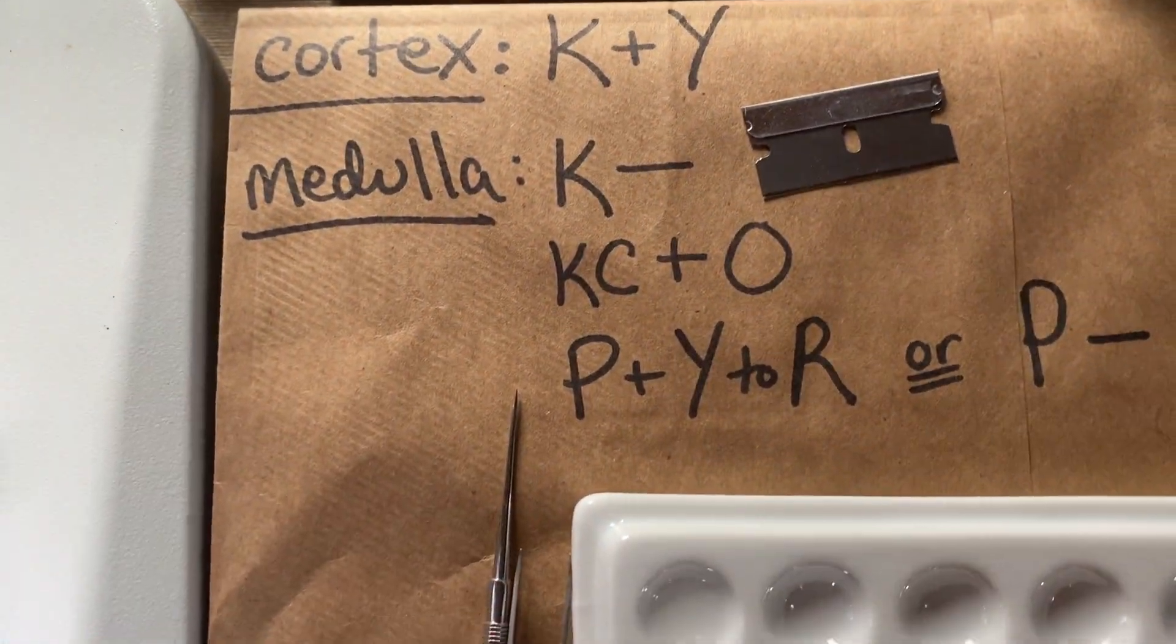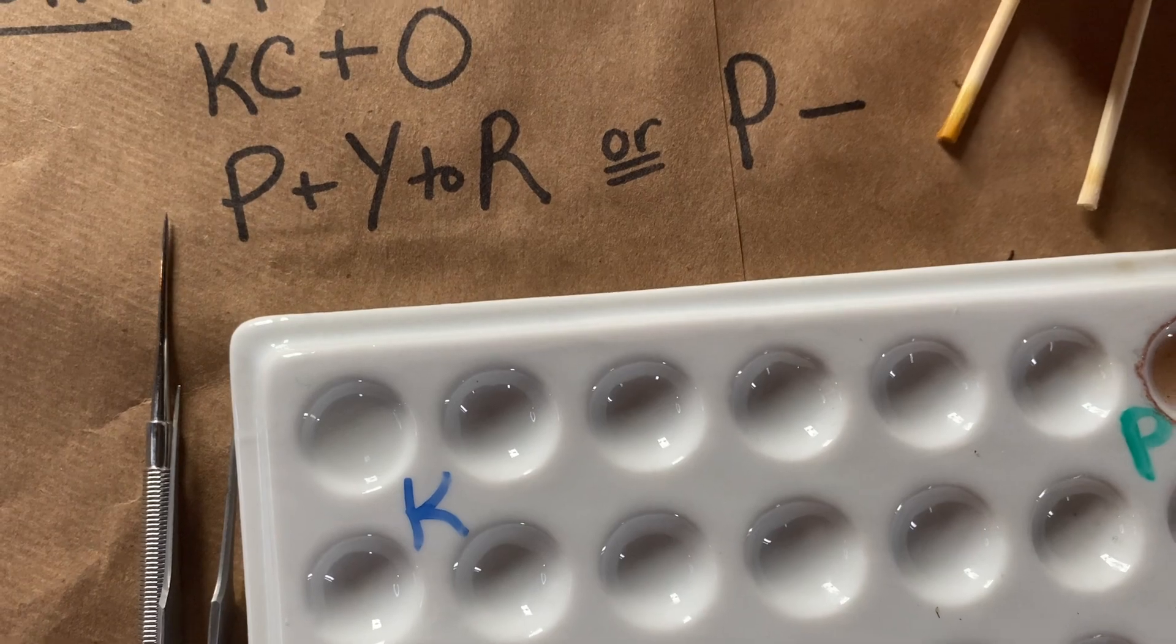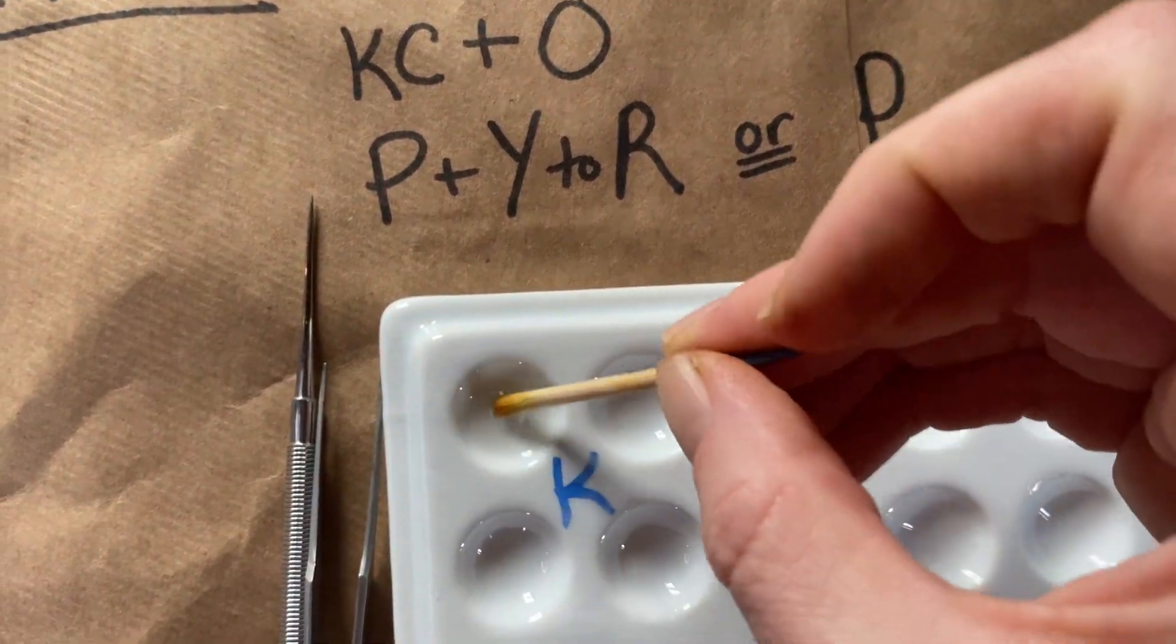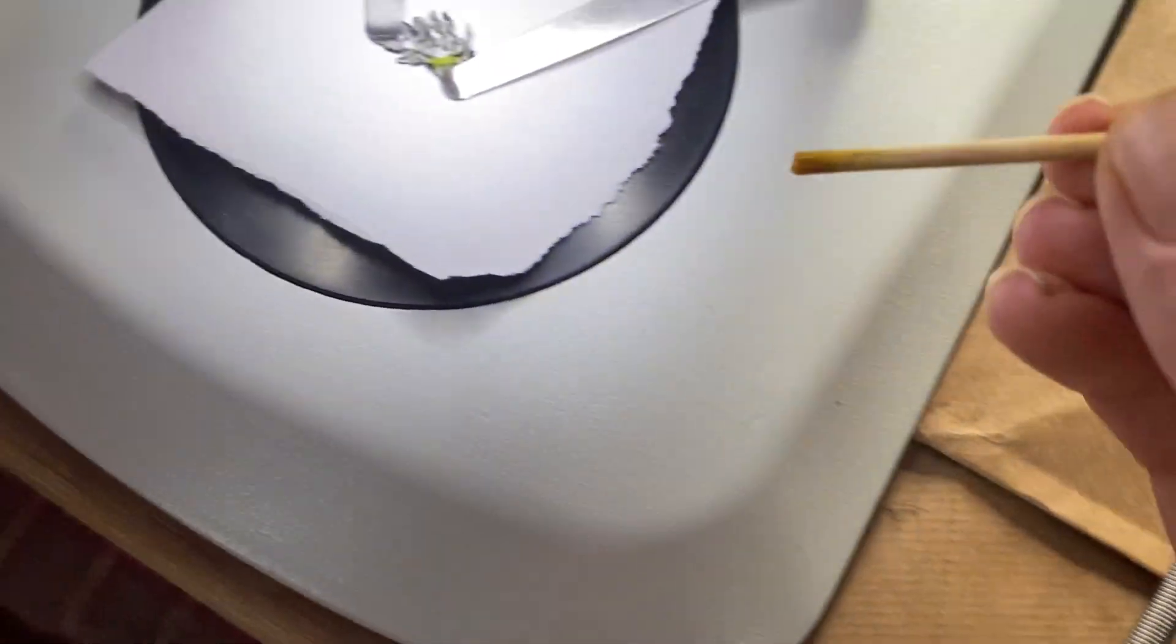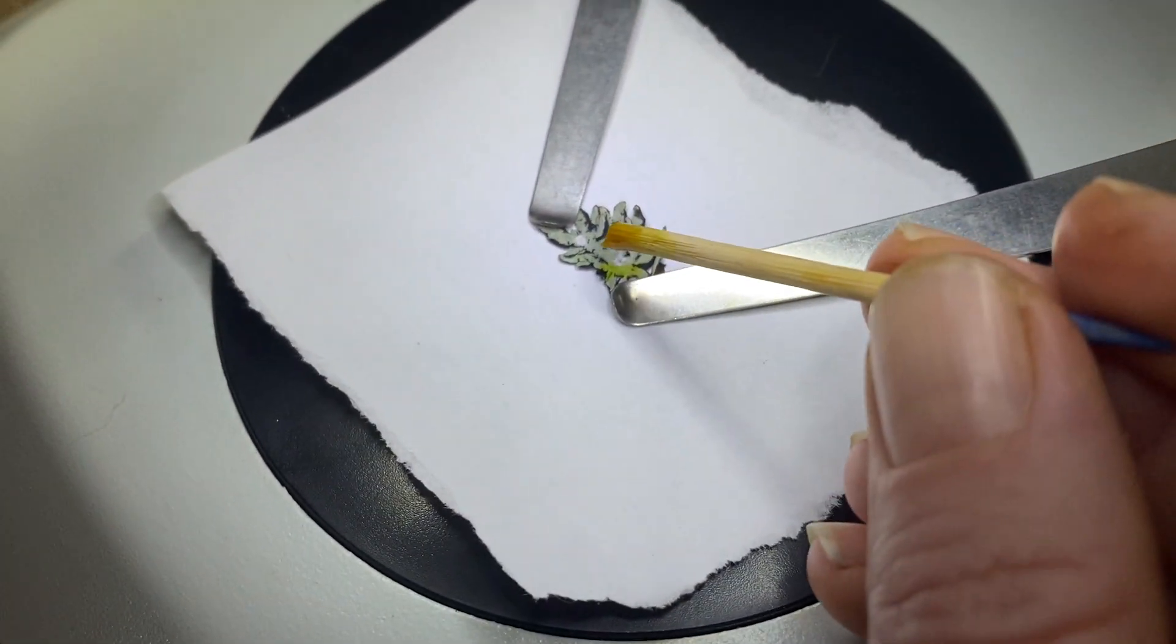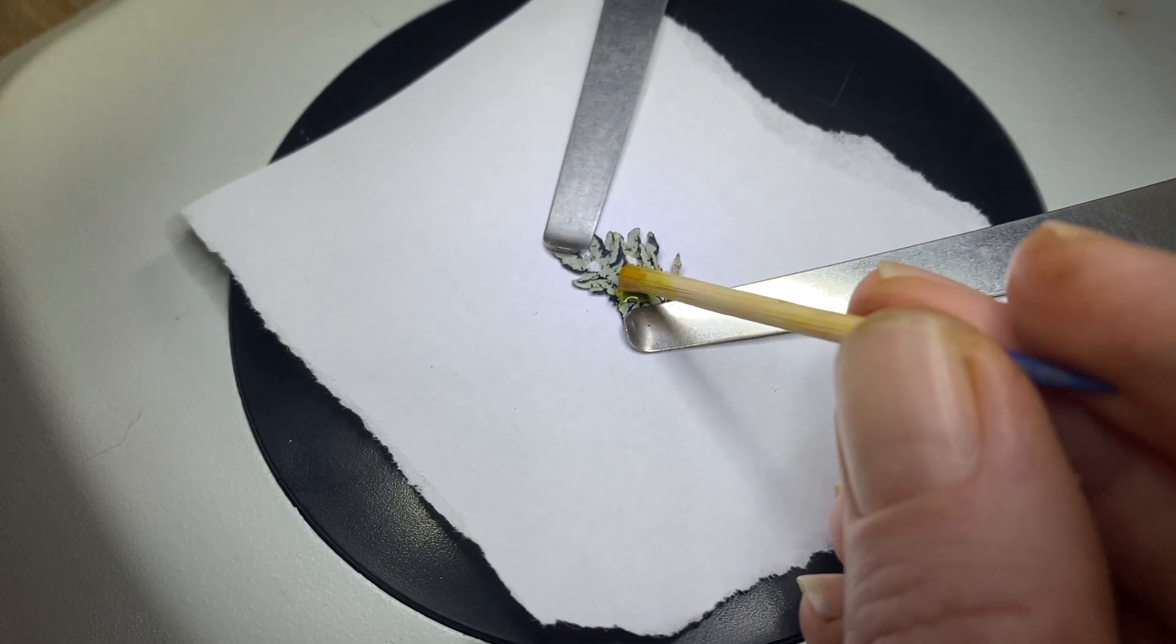Now for the medulla, I should be able to apply the K test again on that cottony area, and I shouldn't see a dramatic color change at all. So we're going to do the same thing, but instead of putting it on the cortex, I'm just going to drop it onto that cottony area.